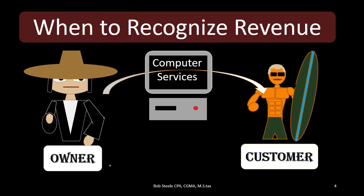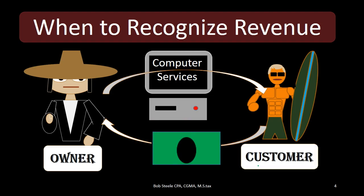Our first example: we're a service company doing computer services for a customer — not selling the computer, just doing the services. In a normal service transaction, if cash is received at the same point in time, we will record revenue at the same time cash is received because we did the work and received cash simultaneously.